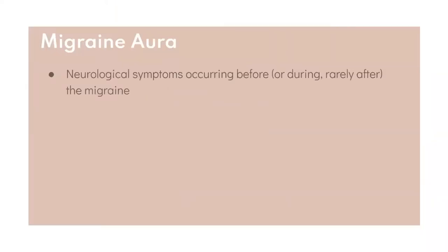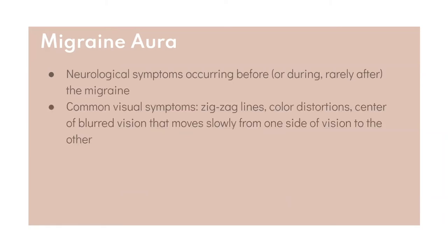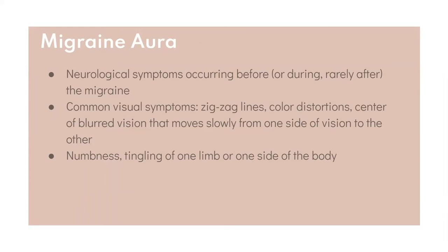Some people with migraine, in addition to their pain symptoms and sensitivities, experience something called aura. Aura is defined as neurological symptoms that occur primarily before — very rarely during or after — the actual attack. Most oftentimes these are visual, described as zigzag lines, distortions of color, an area in the center of vision that's blurred, and that can move slowly from one side of your visual field to the other.